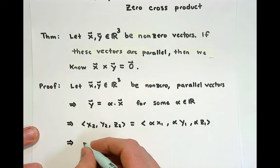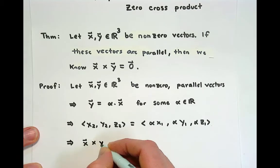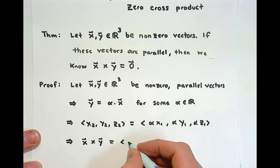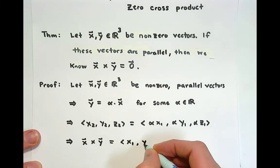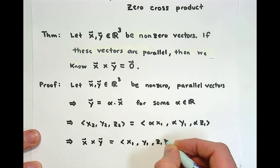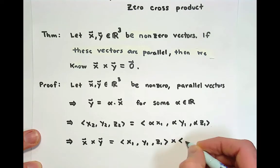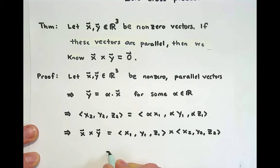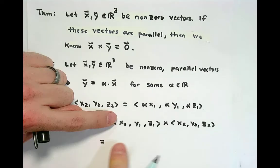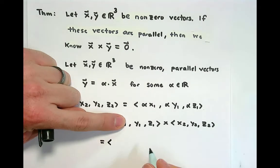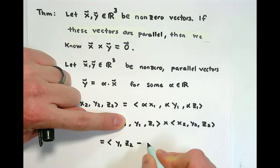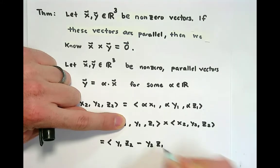When we go to take the x cross y vector, which we wanted to calculate, we do this using the component form of the definition, which was given in our previous videos. First thing we do for the first component is we cancel out the x's, and we find the area of the parallelogram. This is now hopefully becoming a routine calculation.